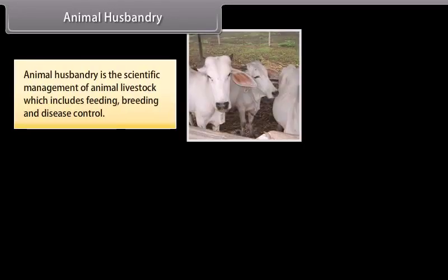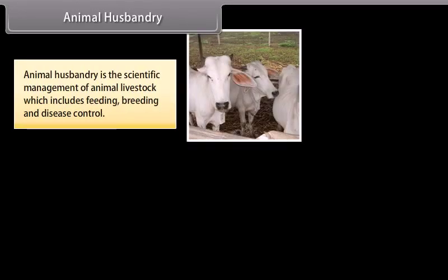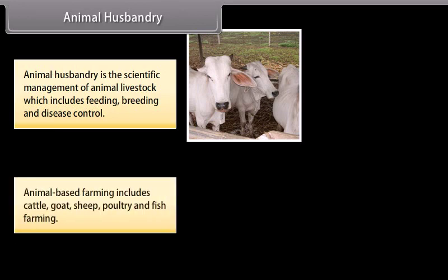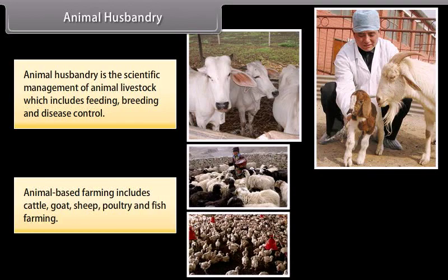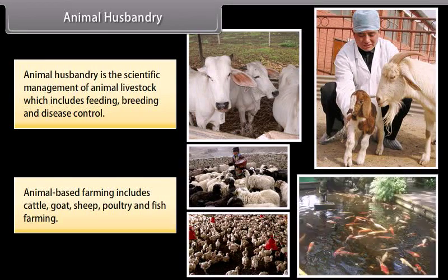Animal husbandry is the scientific management of animal livestock, which includes feeding, breeding and disease control. Animal-based farming includes cattle, goat, sheep, poultry and fish farming.